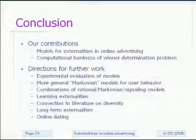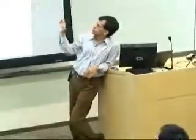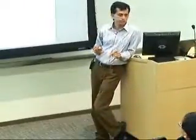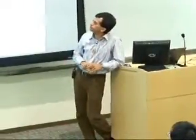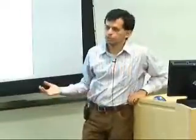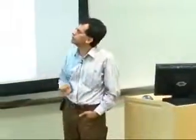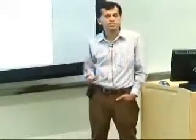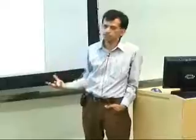To conclude, our contribution was to define models for externalities in online advertising based on assumptions about how users behave, and we discussed the computational hardness of the winner determination problem. This is a very interesting and relatively new field — people have not looked much at externalities here. The business is huge — $21 billion spent in 2007. The whole business is basically built on the assumption that click-through rates are separable, which is obviously wrong. There is a lot to be gained. Heuristically, Google shows fewer ads than Microsoft and Yahoo but has considerably higher search revenue — one justification is that they implicitly account for the fact that showing more ads doesn't necessarily increase total revenue.